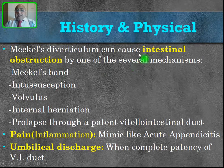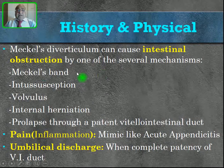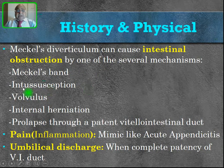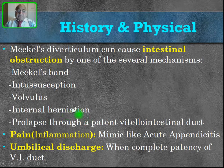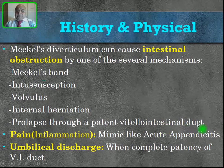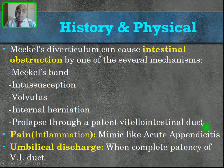Meckel's diverticulum can cause intestinal obstruction by several mechanisms: it may be because of a Meckel's band; the diverticulum can act as a lead point causing intussusception; the Meckel's band can produce volvulus; internal herniation can also occur; and sometimes there may be prolapse through the patent vitelointestinal duct, resulting in a mass coming out of the umbilicus.